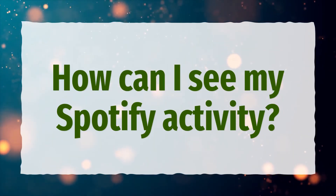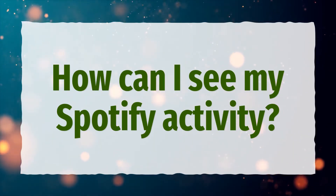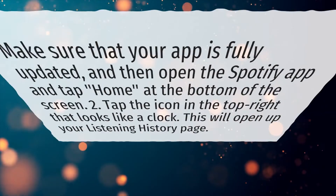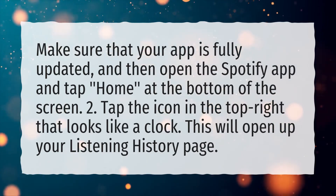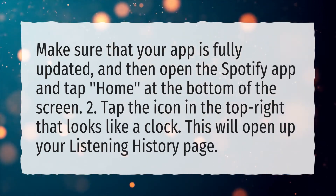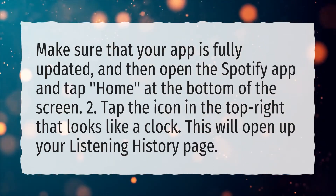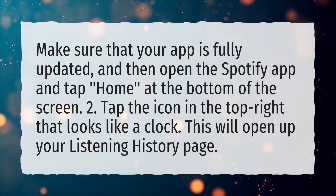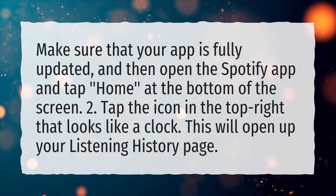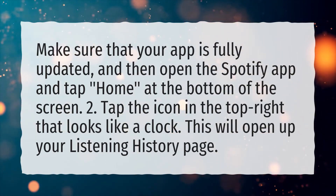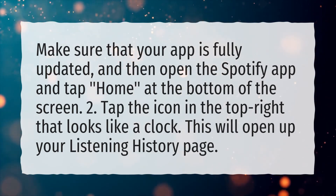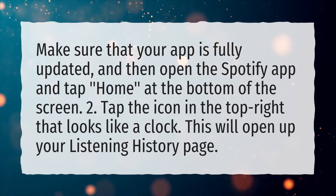How can I see my Spotify activity? Make sure that your app is fully updated, and then open the Spotify app and tap Home at the bottom of the screen. Then tap the icon in the top right that looks like a clock. This will open up your listening history page.